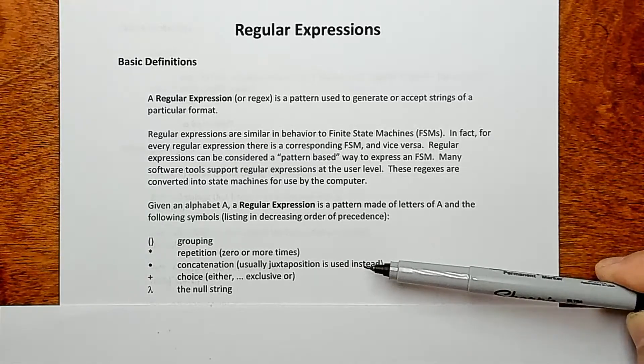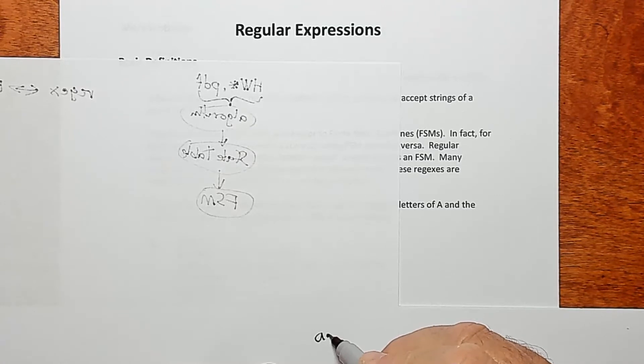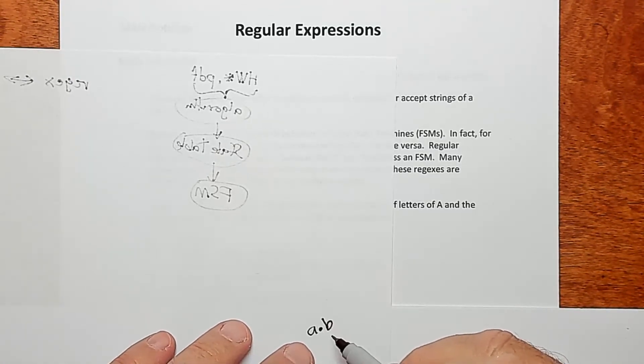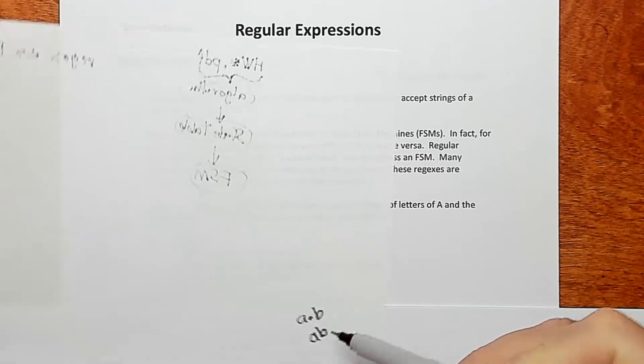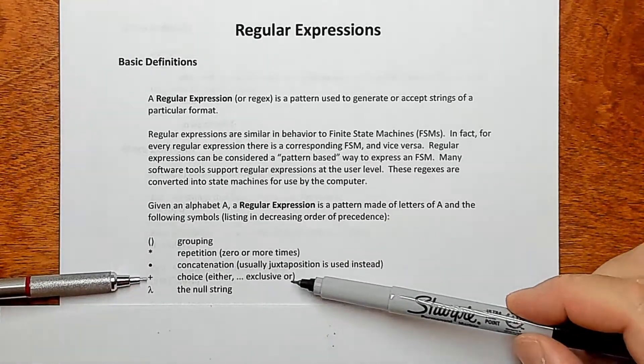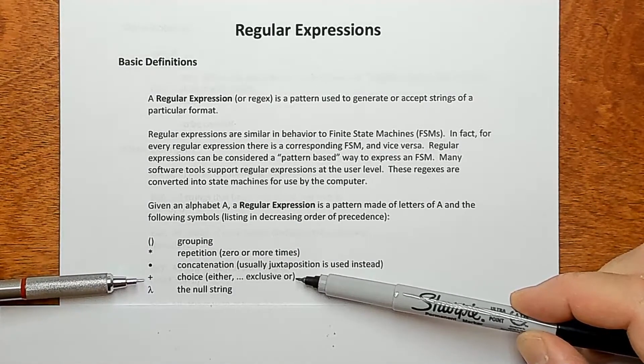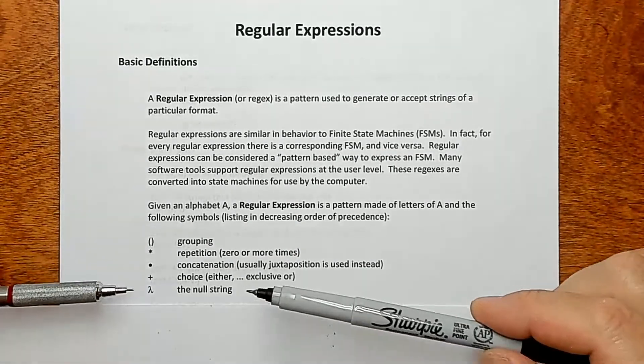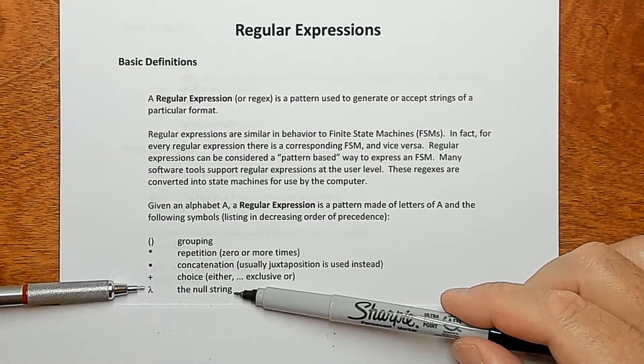So you can choose whatever this star operator is next to zero or more times. And then there's concatenation. Concatenation is just when you want to list two symbols as being next to each other like A and B. And typically we would omit this operator and just use juxtaposition, that is just put the symbols next to each other. But if you want to be more explicit, you could use the dot operator. Okay, then we have choice. This allows you to choose between two things, one or the other, but not both. So it's exclusive or. And then we have lambda, symbol lambda, which is a way to indicate null strings.